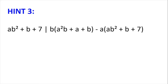Hint number 3. Using hint number 2 and hint number 1, we can write: ab² + b + 7 divides b multiplied by (a²b + a + b) minus a multiplied by (ab² + b + 7).